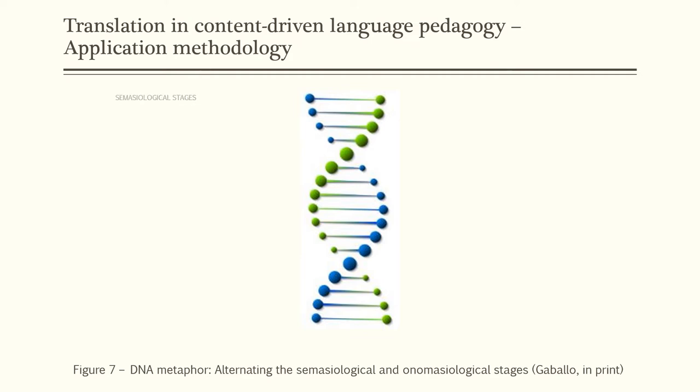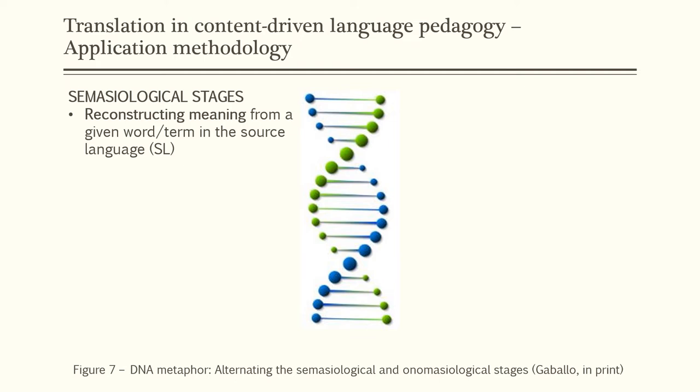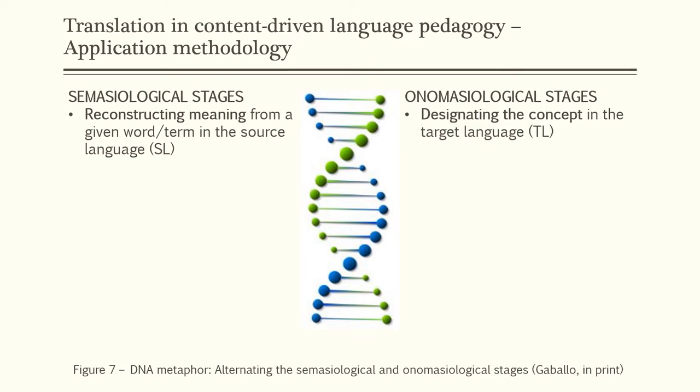The methodology can be applied as follows. After going through the first intralinguistic semasiological stage — the reconstruction of meaning from a given word or term in the source language L1 — the student moves to the second stage: an interlinguistic onomasiological stage used to designate the concept in the target language. As this is a complex task, the best way is to unpack it into various steps which, although presented sequentially, progress together as if they were the two strands in the double helix of the DNA structure.